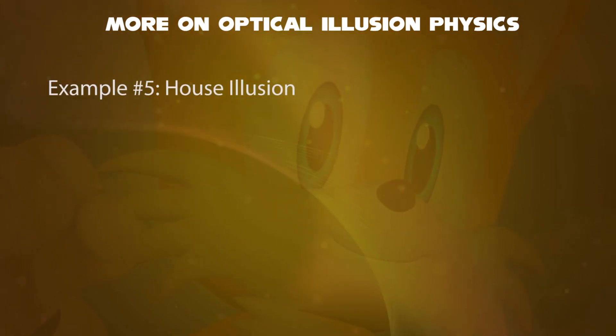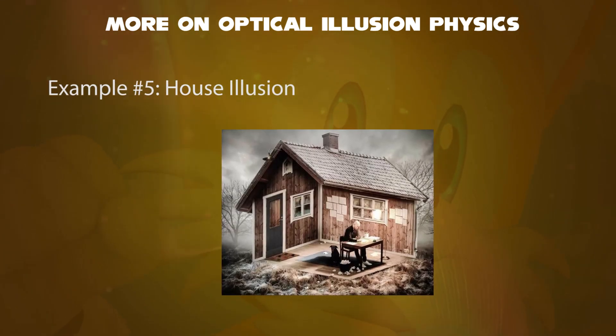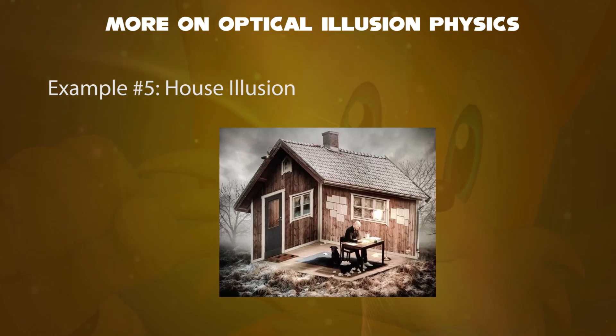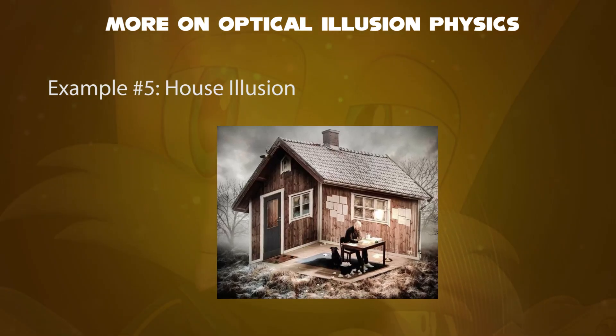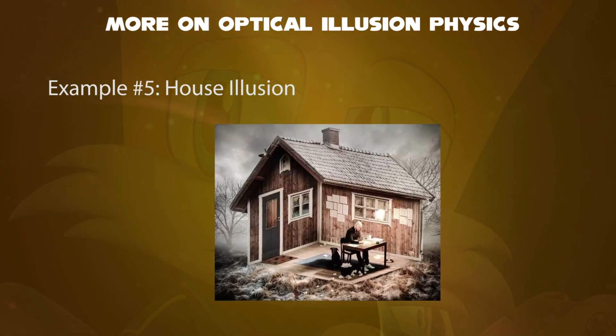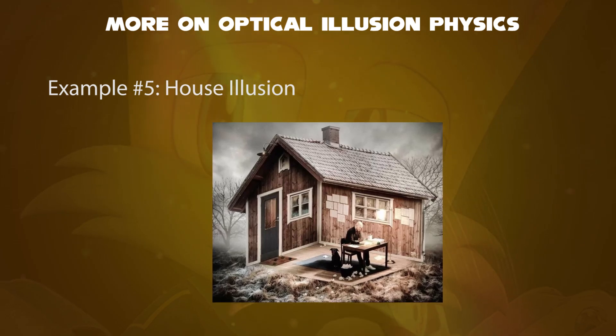And fifth example, the house illusion. Consider this man doing work inside the house, but it appears to be outside the house. This is what happens when our brains misinterpret the physical properties of an object.